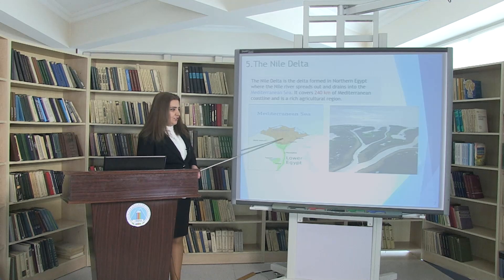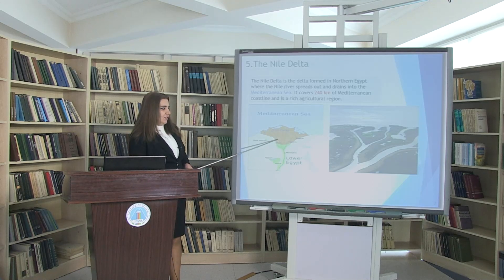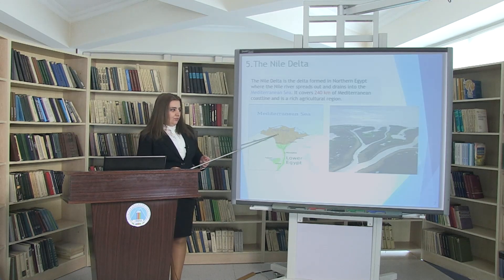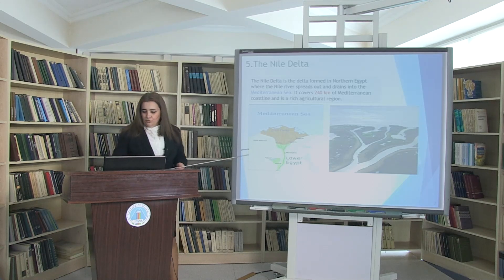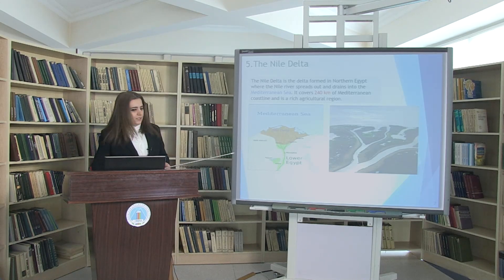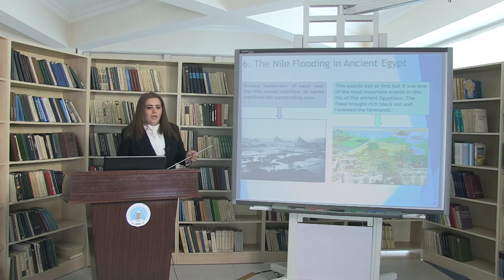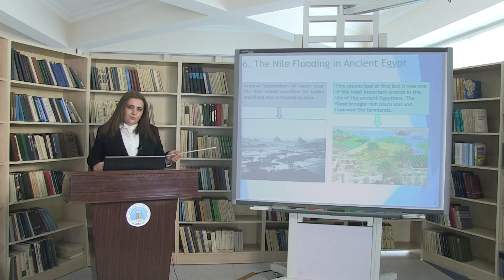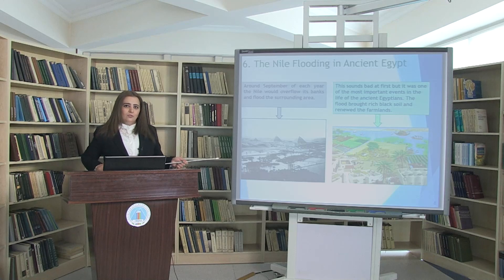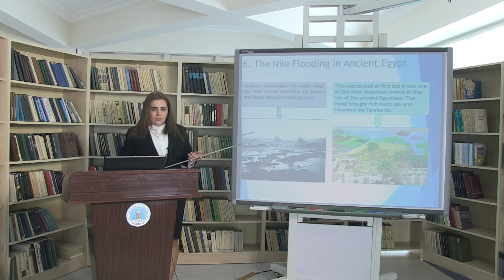The Nile Delta is situated in the Mediterranean Sea. It covers 240 kilometers and it is a rich agricultural region for these countries.